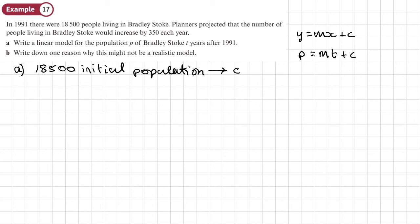So write an equation for the population. So it's going to be the population equals our gradient times by T plus C. Now our gradient is going to be the increase as T increases by 1. And it said, it's got it here, that it would increase by 350 per year. So 350 is my gradient, basically.